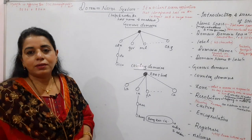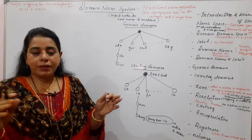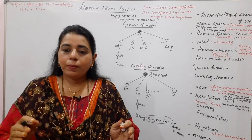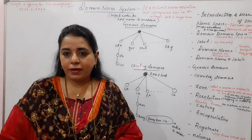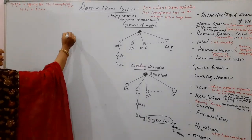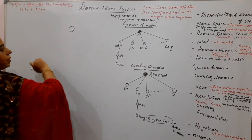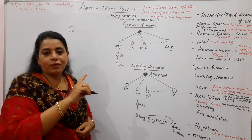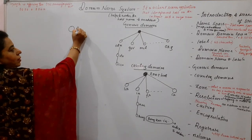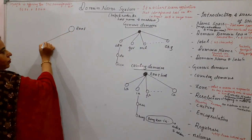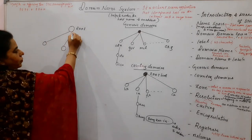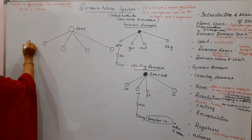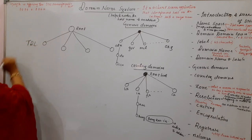First, you should know that you can represent the DNS namespace — the domain namespace — in the form of an inverted tree. If you write at the root level, that is the root of the tree, it becomes the top server in the hierarchy and is called the root server. The next level of servers are called the top level domain servers, or TLD servers.